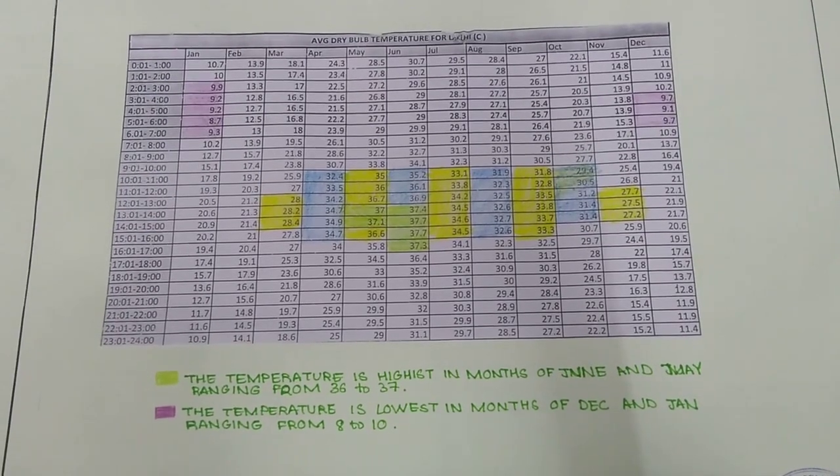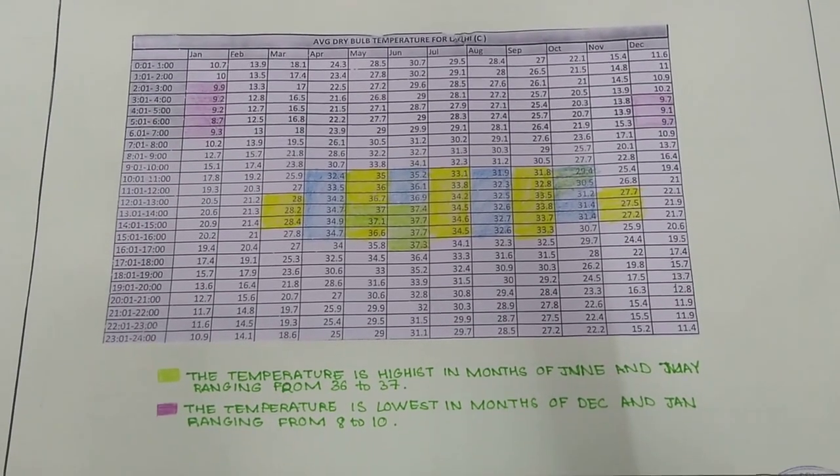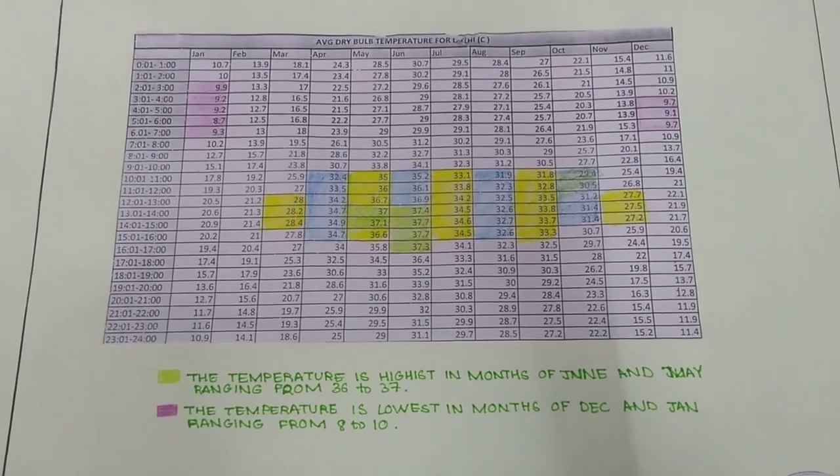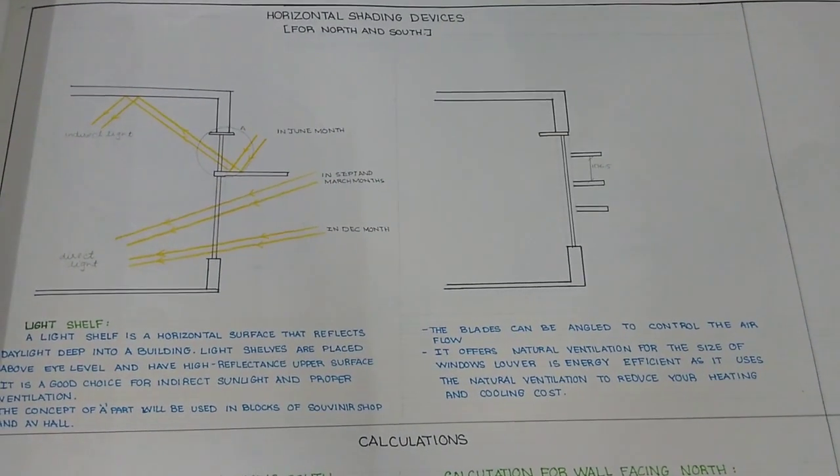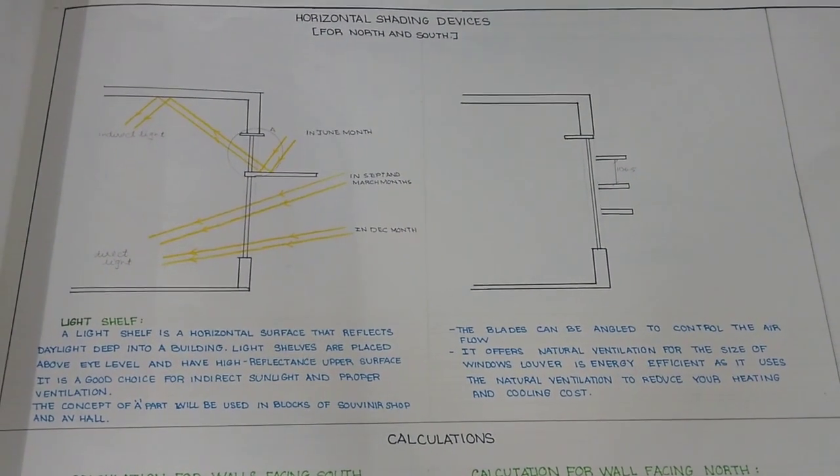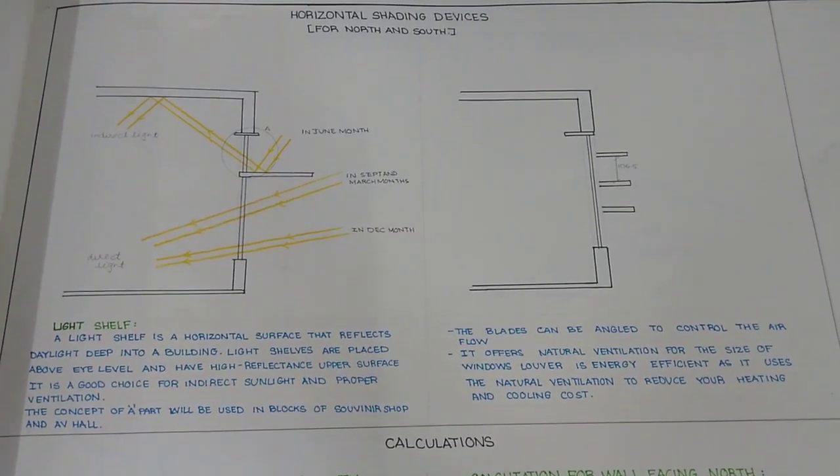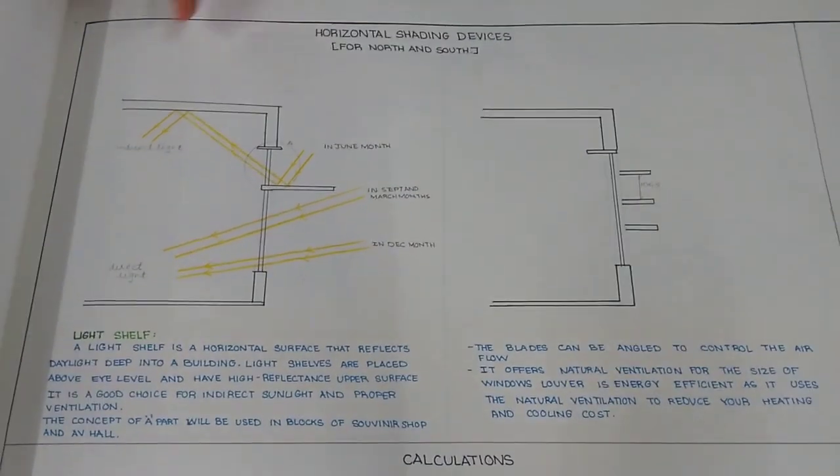In May, the temperature ranges from 36 degrees to 37 degrees. By using data from the sun path diagram, I have come to a conclusion of horizontal shading devices in this manner.